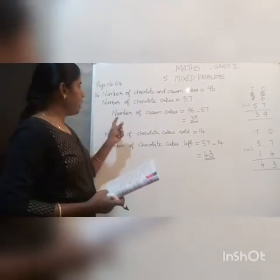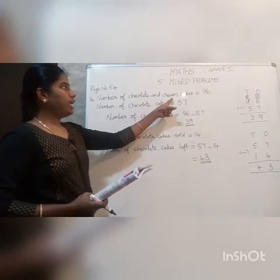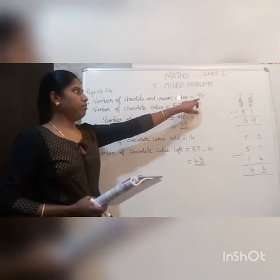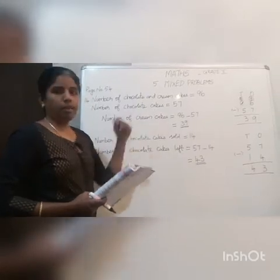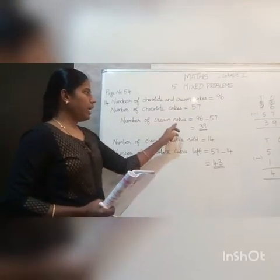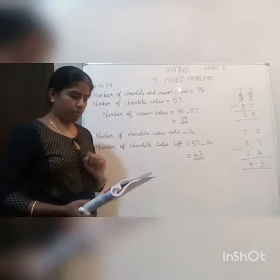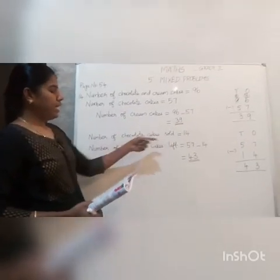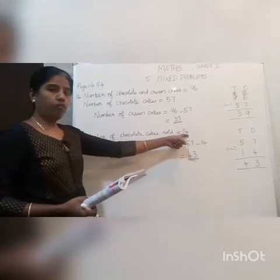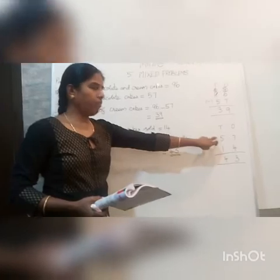First we need to find the number of cream cakes. They gave chocolate and cream cakes together as 96, and chocolate cakes as 57. So 96 minus 57 gives us 39. The number of cream cakes is 39. For the next question: 14 chocolate cakes were sold. Number of chocolate cakes was 57, so 57 minus 14 equals 43. The number of chocolate cakes left in the shop is 43.